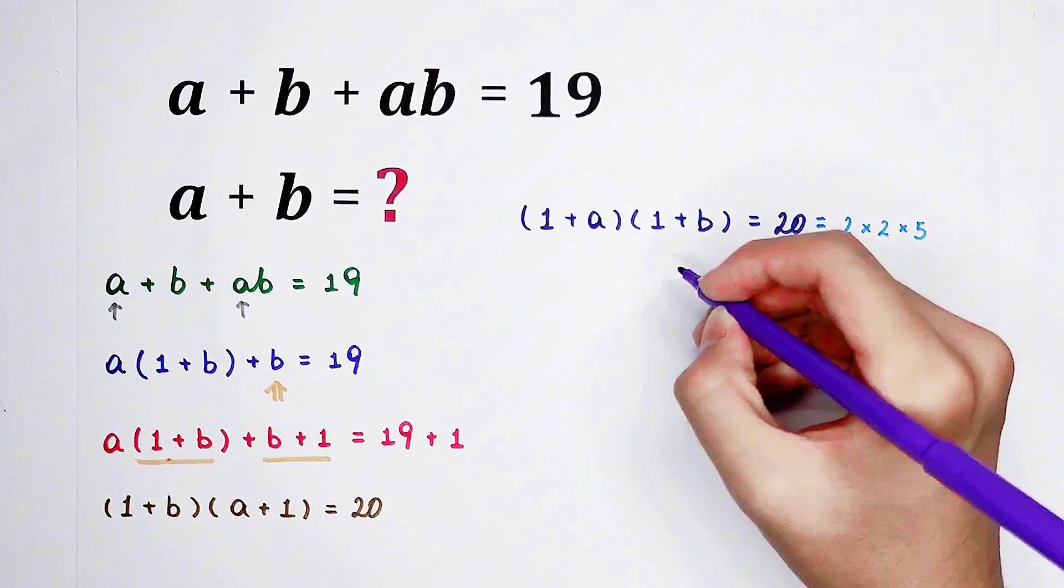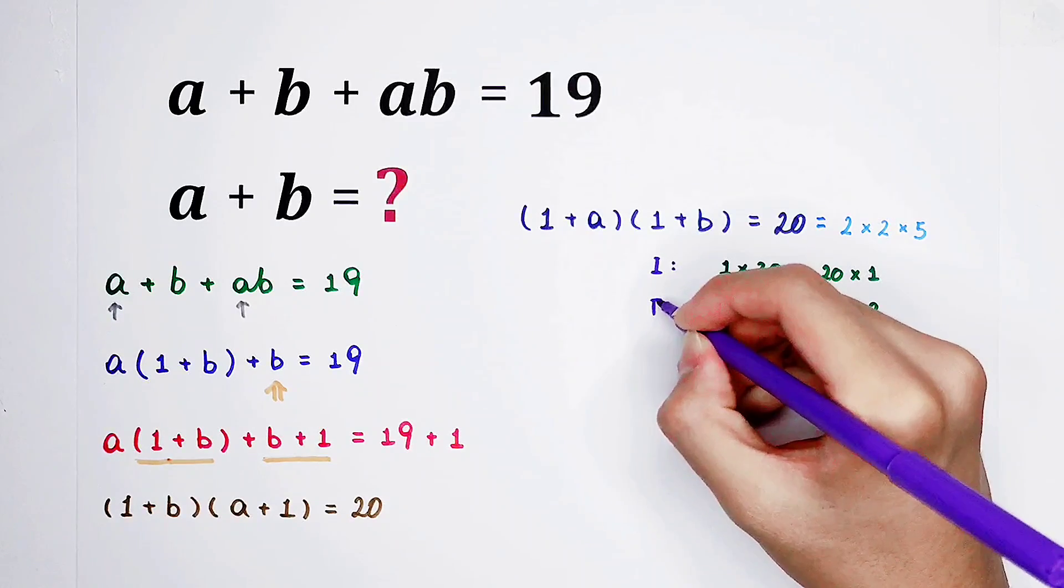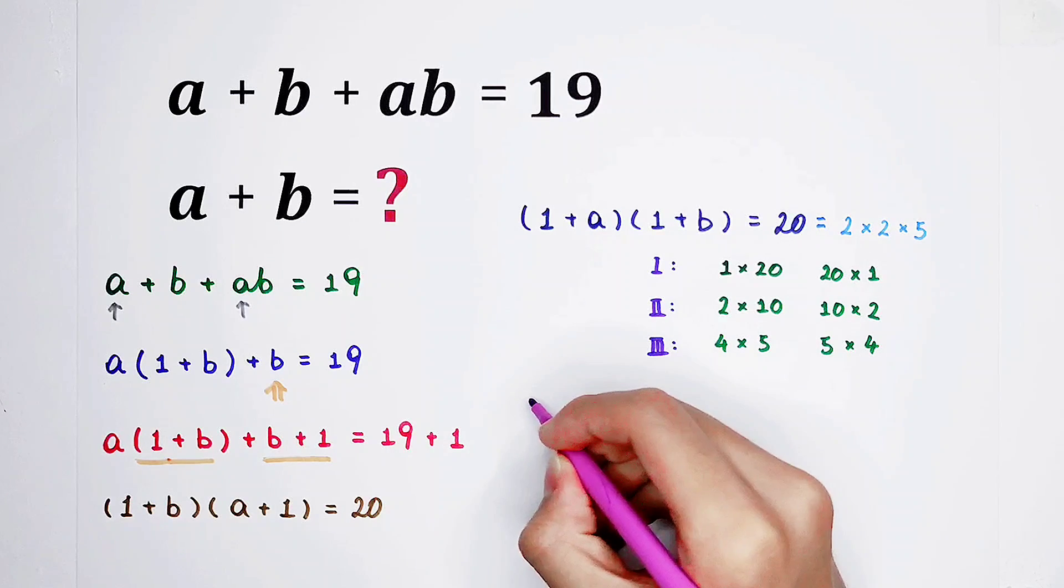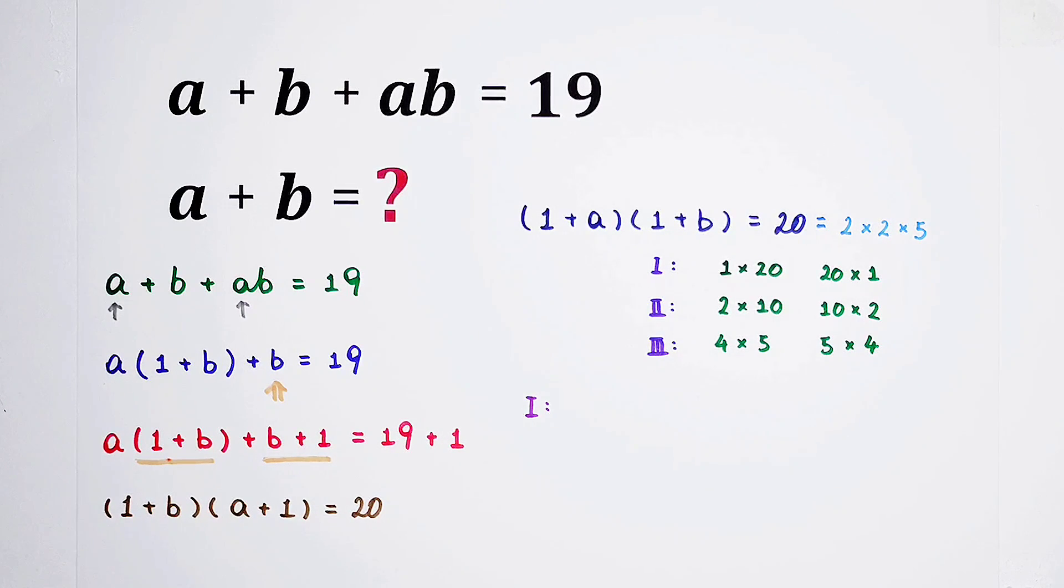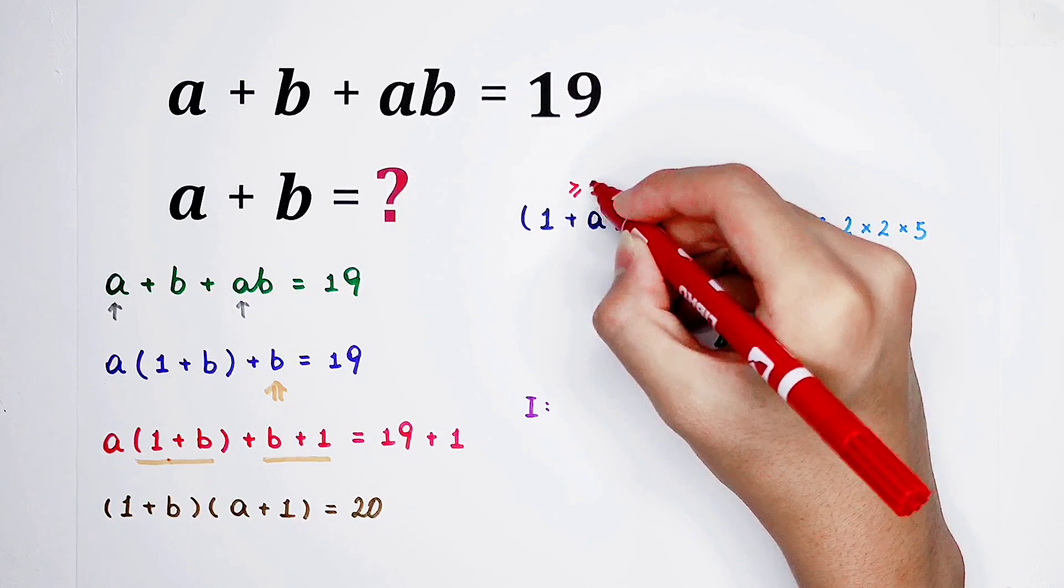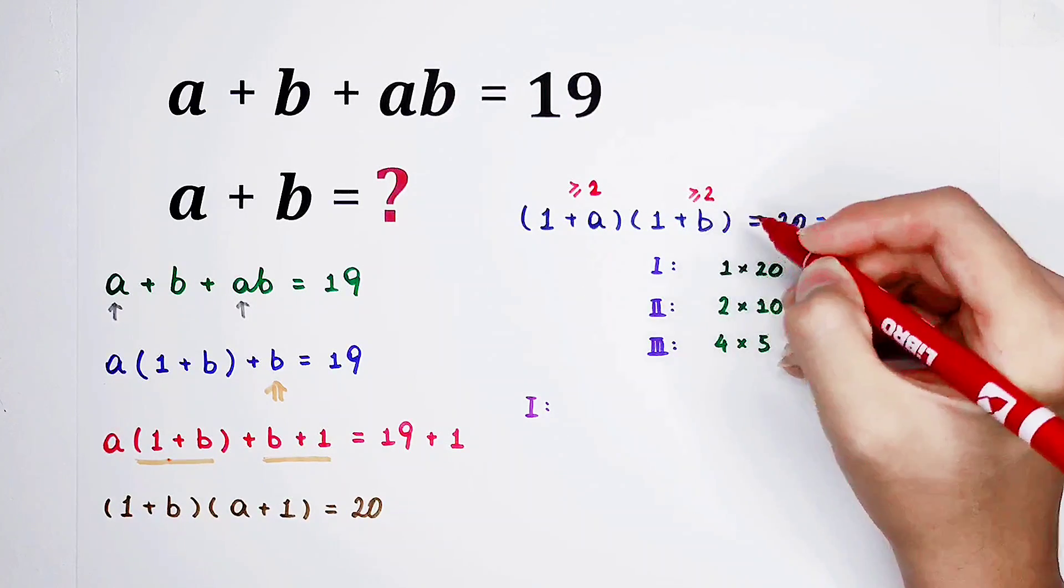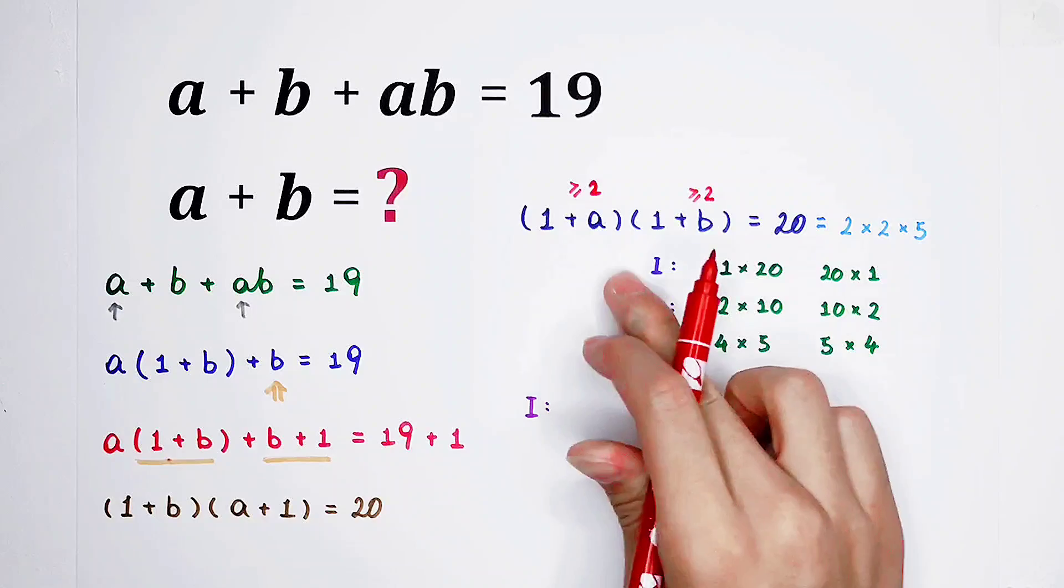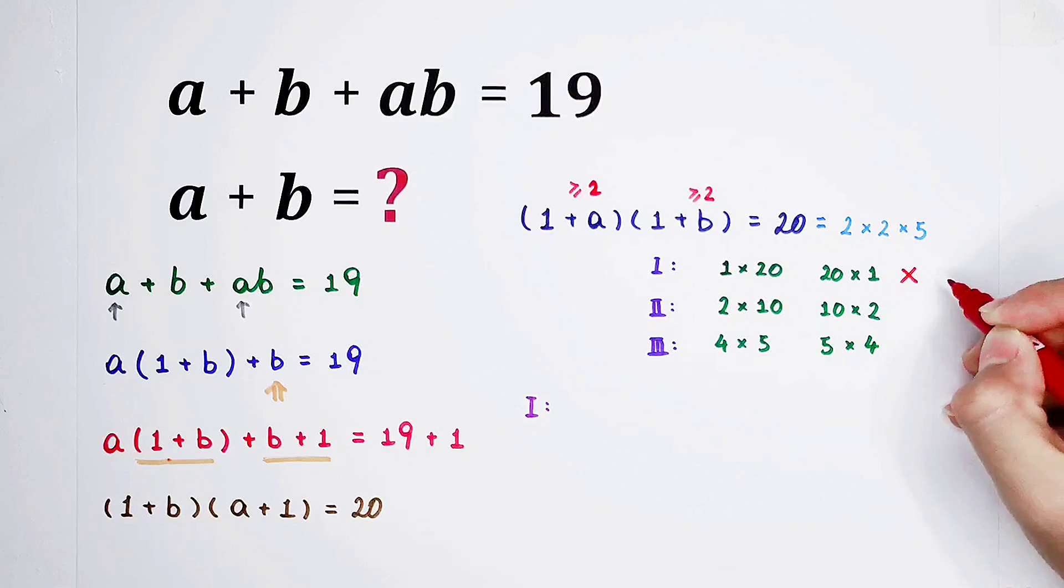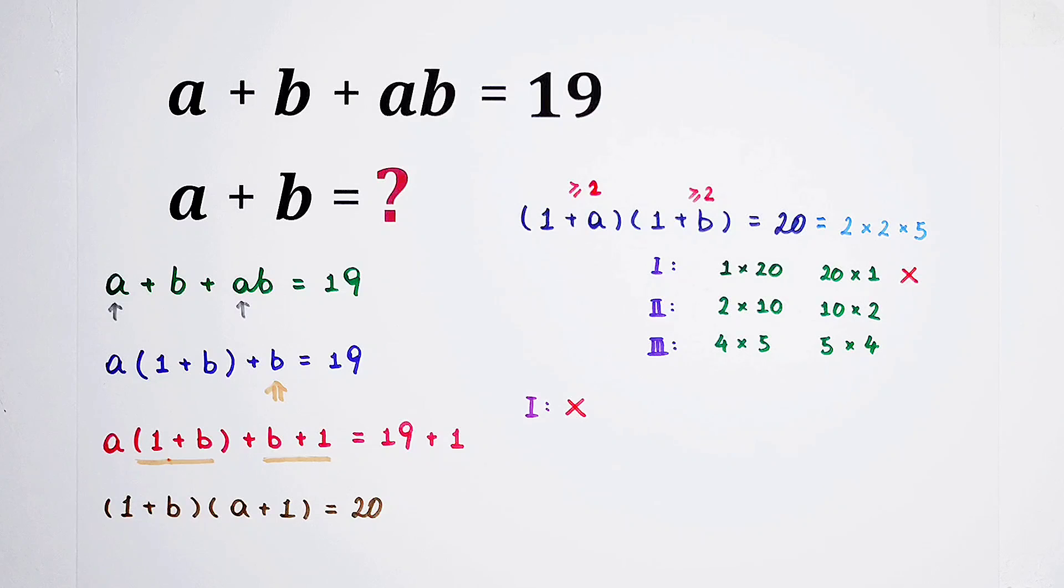I'm going to call them first group, here the second, here the third. For our first group, since A and B are positive integers, 1 plus A should be greater than or equal to 2, and 1 plus B should also be greater than or equal to 2. However, in our first case, here is 1, here is 1. So, it cannot exist. It doesn't work. Our first group doesn't work.